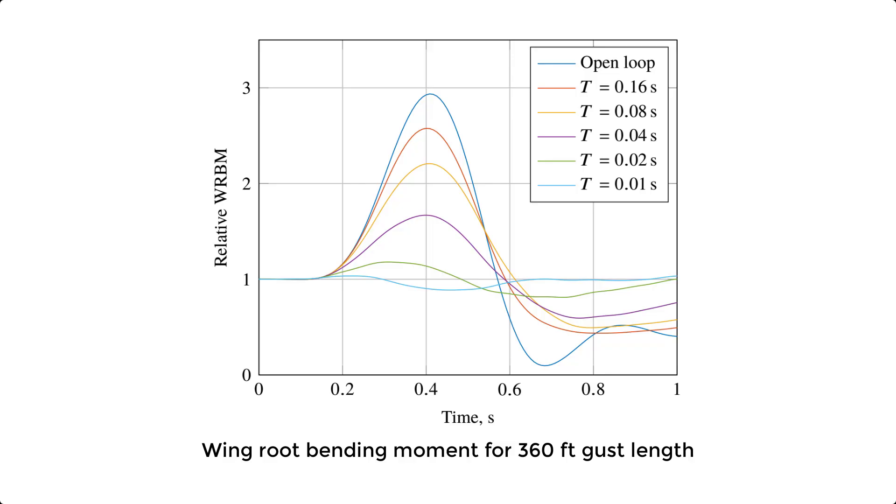Here the dynamic wing root bending moment relative to the trim point is plotted as a function of time. It can be seen that, at least in the simulation, the load can be very strongly reduced for small time delays.